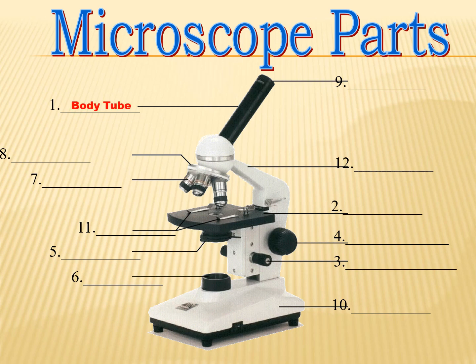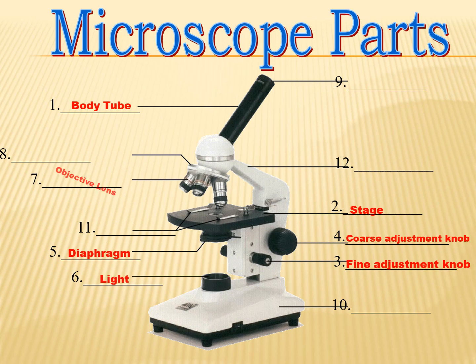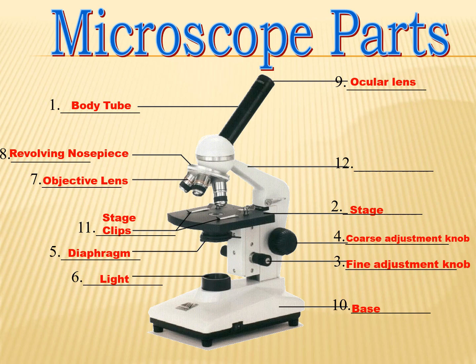The different parts of the microscope are: number one, body tube; number two, stage; number three, fine adjustment knob; number four, coarse adjustment knob; number five, diaphragm; number six, light; number seven, objective lens; number eight, revolving nosepiece; number nine, ocular lens; number ten, base; number eleven, stage clips; and number twelve, arm.